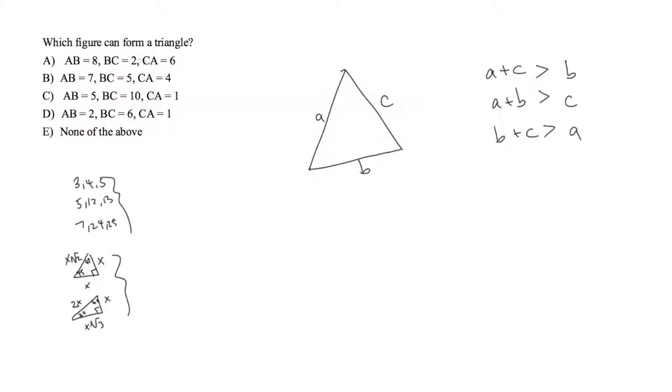So if we take answer choice a we have 2 plus 6 that's not greater than the third side so that can't possibly be true.